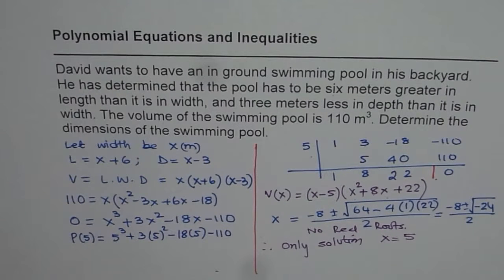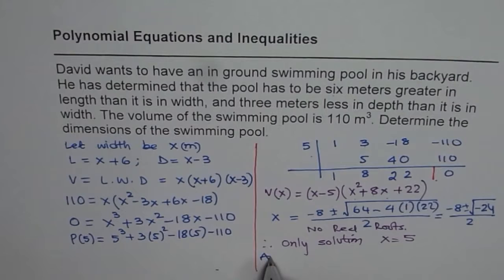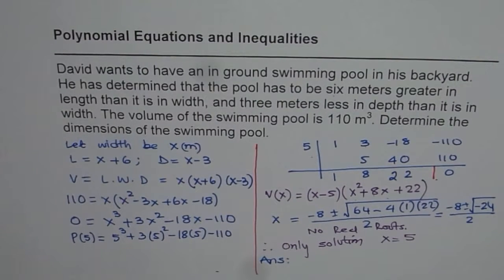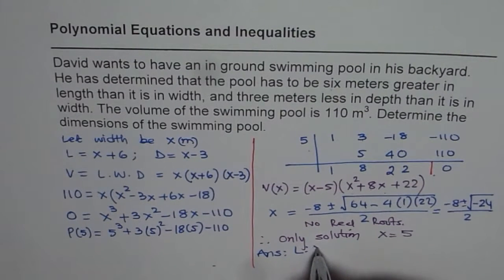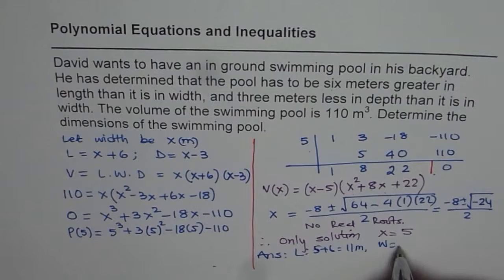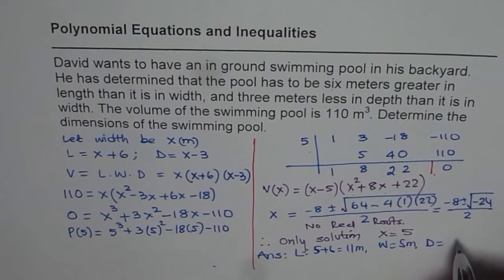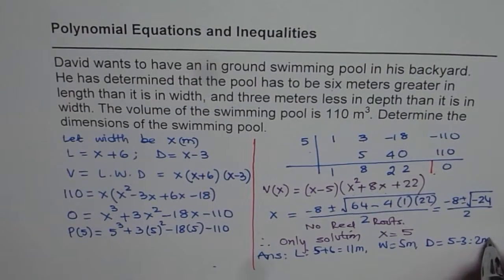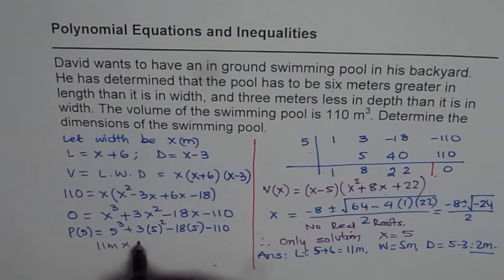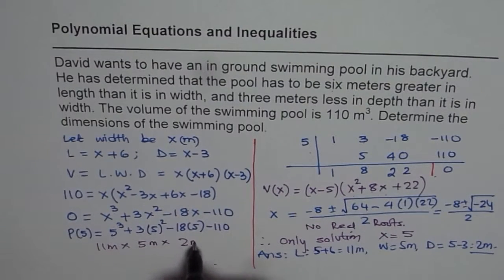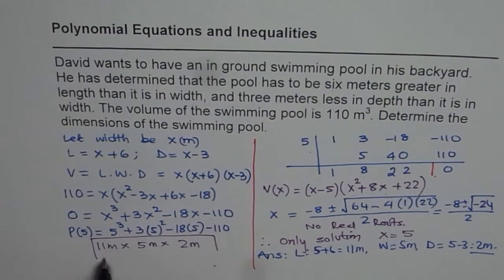Now we can write down the dimensions. Since x = 5: length = 5 + 6 = 11 meters, width = 5 meters, and depth = 5 − 3 = 2 meters. So the dimensions of the pool are 11 meters by 5 meters by 2 meters.